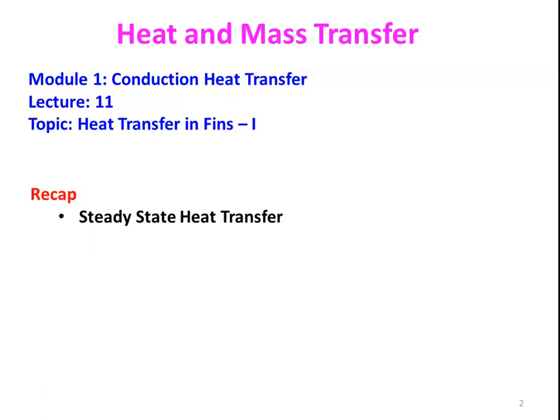We recap from the previous lecture. We studied earlier the steady state heat transfer — one dimensional steady state heat transfer in slab, cylinder and sphere. We solved problems on composite slab, composite cylinder, composite sphere. We also discussed steady state heat transfer with heat generation. We solved problems on the critical thickness of radius and so on. Today we are going to discuss the heat transfer in fin.